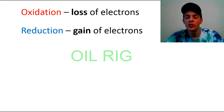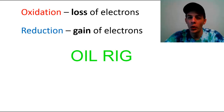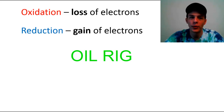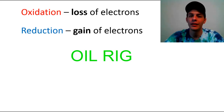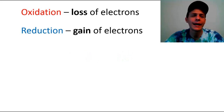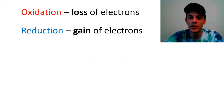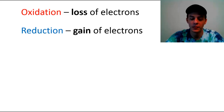There are a couple of memory tricks you may want to use to remember that oxidation is losing and reduction is gaining of electrons. The most common one is OIL RIG — O-I-L: oxidation is losing, and R-I-G: reduction is gaining. Personally I don't really think it's that difficult to memorize these two facts, but if you want to use a mnemonic like that, by all means.